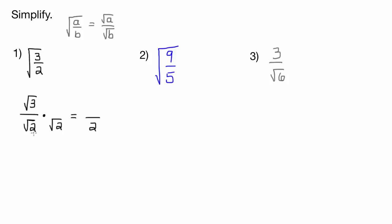But remember, we're going to change the value of the expression here if we multiply the denominator by something and not the numerator. So whatever we do to the denominator, we have to do to the numerator. So we just multiply by root 2 over root 2. Root 3 times root 2 is root 6.